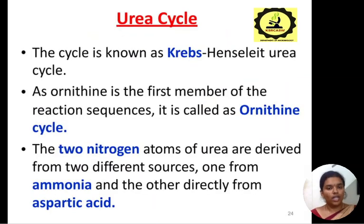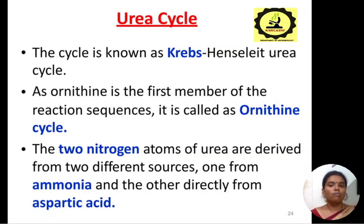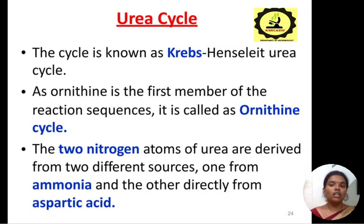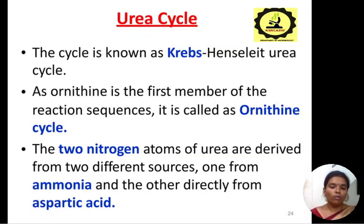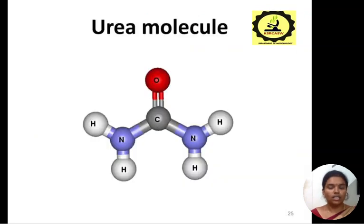Next is the urea cycle. The cycle is also known as the Krebs-Henseleit urea cycle. As ornithine is the first member of the reaction sequence, it is also called the ornithine cycle. So, there are different names for the urea cycle: Krebs cycle, ornithine cycle, urea cycle, and the Henseleit urea cycle. The two nitrogen atoms of urea are derived from two different sources — one from ammonia and the other from aspartic acid.